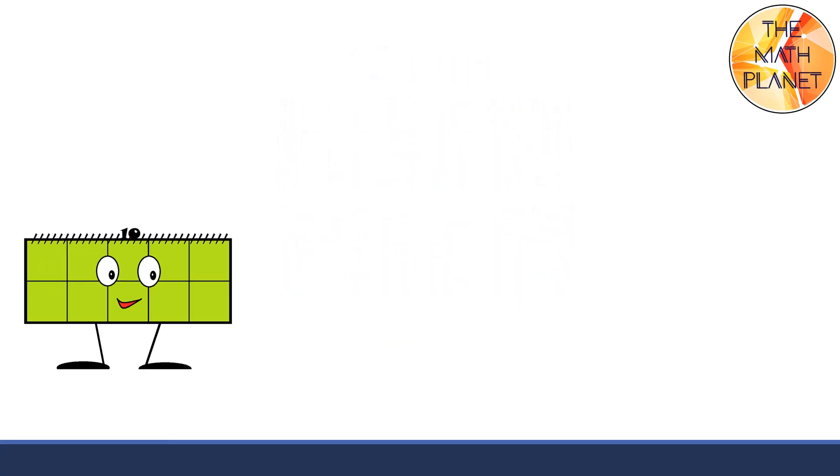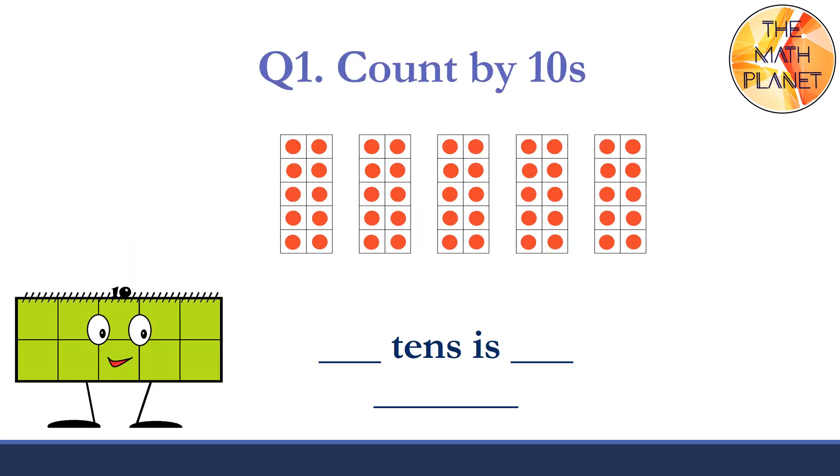Now, let's try some practice questions. Question one. Count by tens. Ten, twenty, thirty, forty, and fifty. So, five tens is fifty. We will also write it in words. Fifty, F-I-F-T-Y.